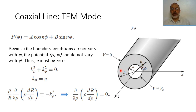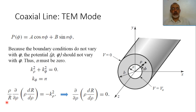Since n = 0, k_φ = 0, and because k_ρ² + k_φ² = 0, this means k_ρ = 0 as well. Thus the differential equation for R(ρ) — which was (ρ/R)(∂/∂ρ)(ρ ∂R/∂ρ) = −k_ρ² — becomes (∂/∂ρ)(ρ ∂R/∂ρ) = 0 after replacing k_ρ² with 0.